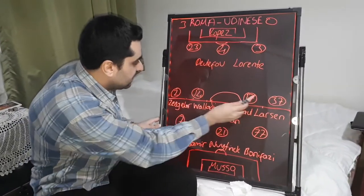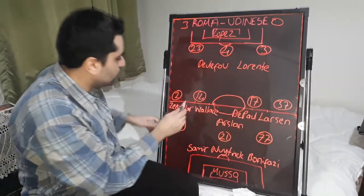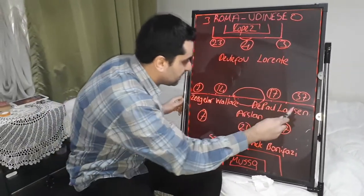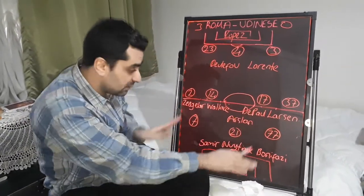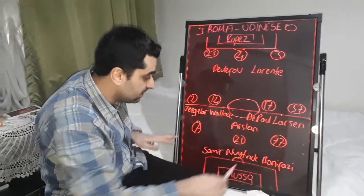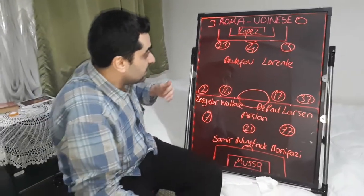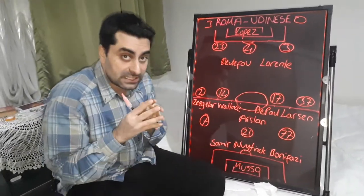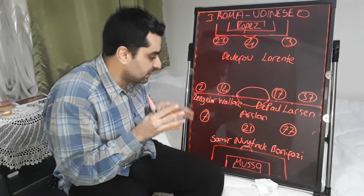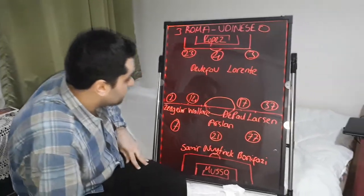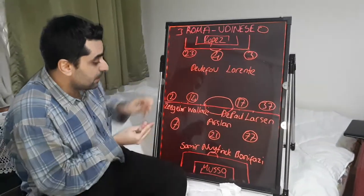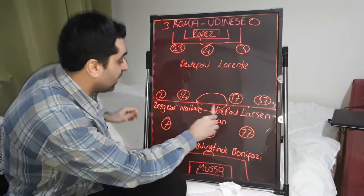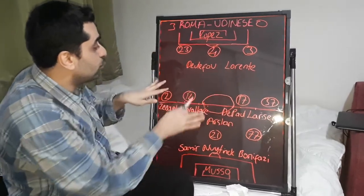Mkhitaryan, Werotut, and from the wings Karstorp and Spinazzola all supported the attacks together. Roma scored two goals in the first half.